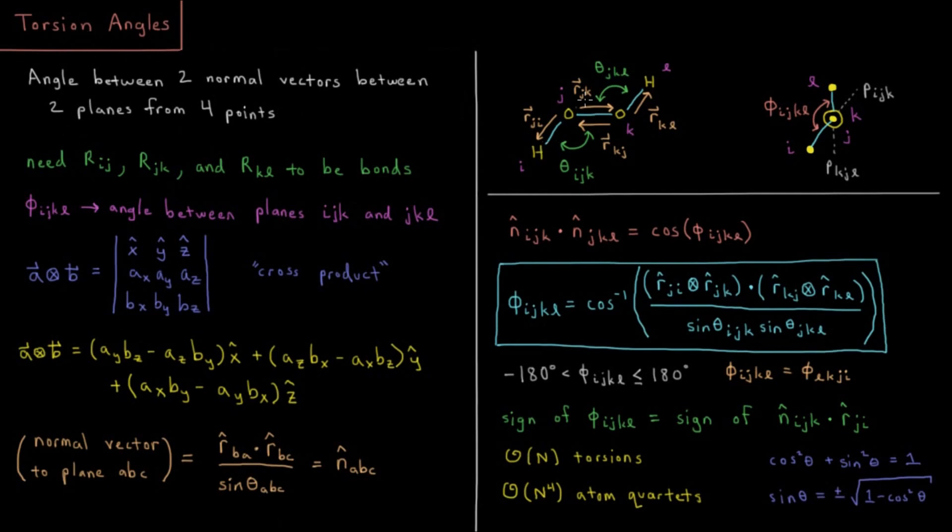In order to have a torsion angle or a dihedral in our molecule, what we need are three distinct sets of atoms which are bonded to one another in succession. So we need I to be bonded to J, we need J to be bonded to K, and we need K to be bonded to L. So then phi I, J, K, L would be the angle between planes I, J, K and J, K, L.